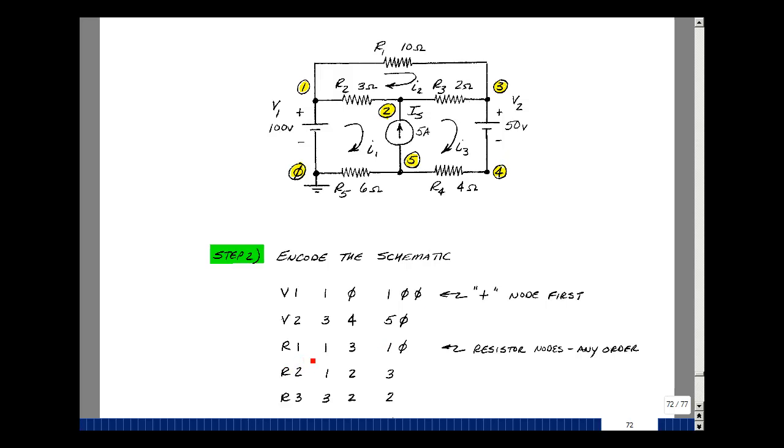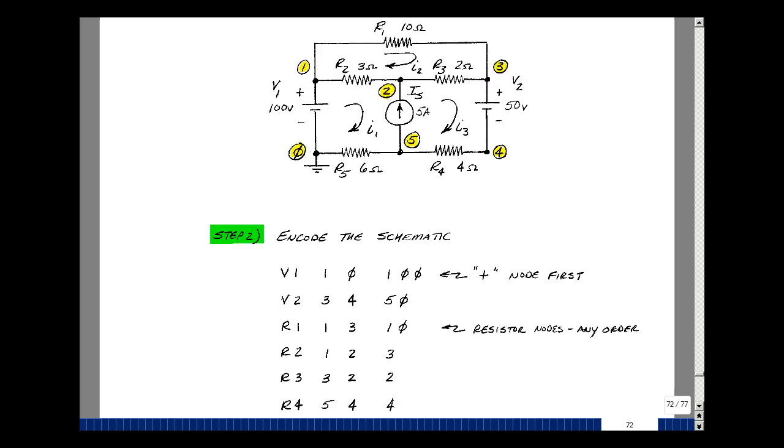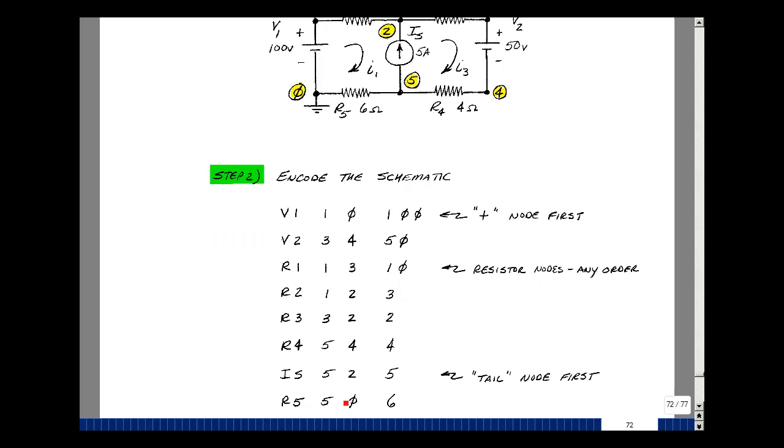Resistors begin with the letter R. Here's resistor R1 between nodes 1 and 3, with a value of 10 ohms. R2 is between nodes 1 and 2 with a value of 3. R3 is between nodes 2 and 3 with a value of 2 ohms. R4 is between nodes 5 and 4 with a value of 4. And lastly, resistor R5 is between nodes 5 and 0 with a value of 6 ohms.